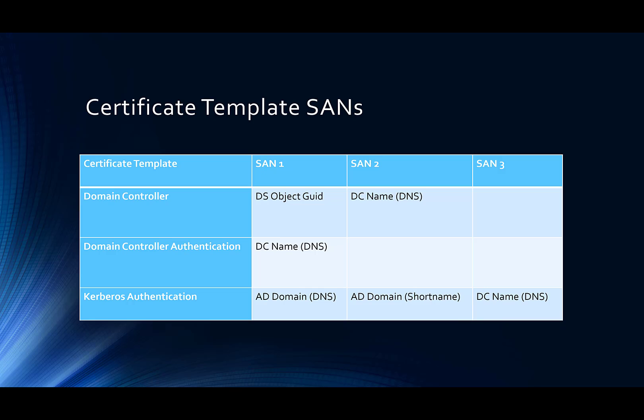The domain controller authentication template will just put the DC's DNS name in the SAN. And then the Kerberos authentication template will put the AD domain DNS name, short name, and the DC name. So for example, if your domain is contoso.com, you'd have contoso.com, then contoso, then the DC name.